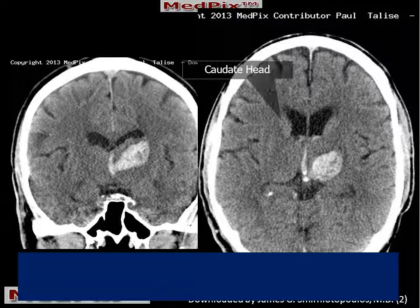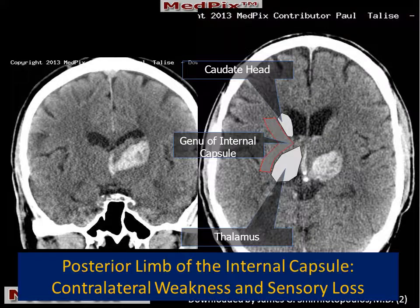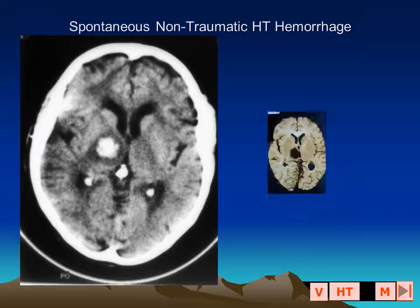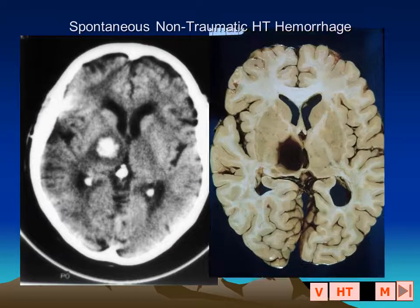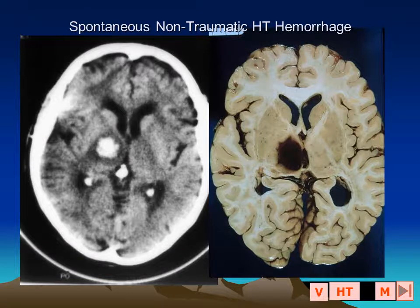Our patient had a classic presentation of a deep gray matter hemorrhage that also affected the posterior limb of the internal capsule as the result of hypertension. Here are a pair of images in another patient who has a deep gray matter and internal capsule hemorrhage, also involving the thalamus.